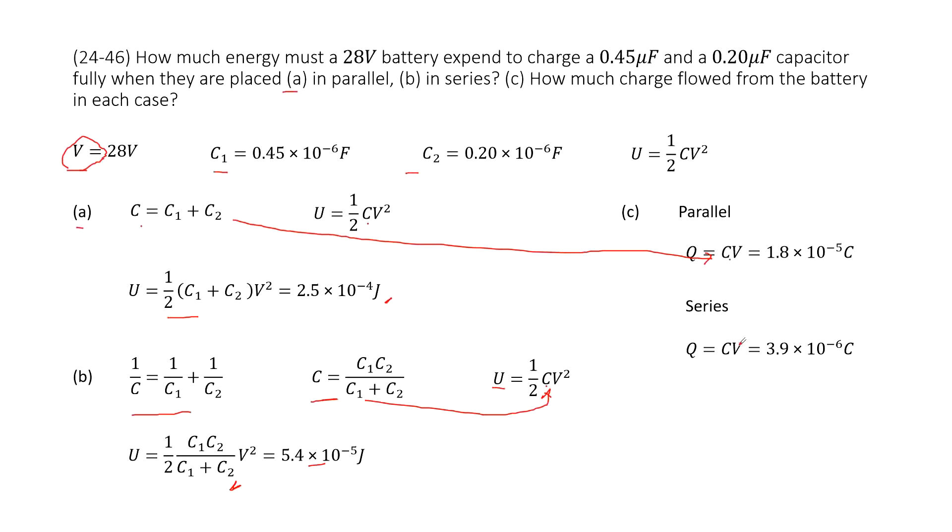The series connection: we can still use the equivalent capacitance times V to get the charge. And this C is just there. This is the series connection. And then you input the content inside, get the answer there. Thank you.